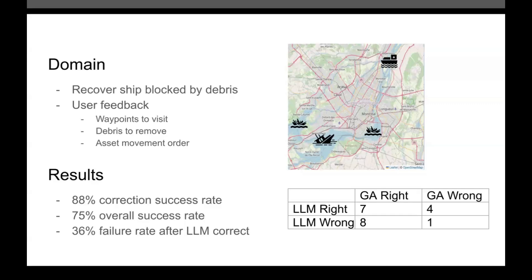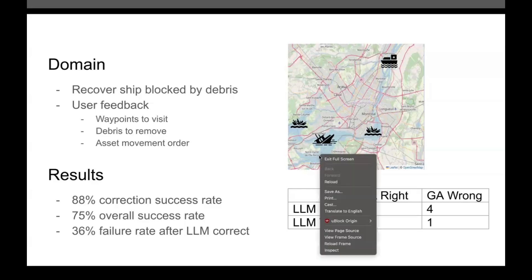However, we found that in 36% of cases where the LLM had answered correctly, the final answer offered by the GA was incorrect. We suspect this is because those cases are ones in which the correct constraint set required multiple constraints to get correct, and so the GA resulted in a plan that satisfied a number of those constraints but not all of them, and the LSTM misclassified the partially correct answer.